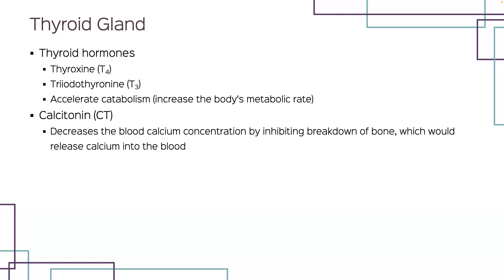Calcitonin is secreted by thyroid gland cells that lie outside of the thyroid follicles. Calcitonin decreases the concentration of calcium in the blood by first acting on bone to inhibit its breakdown. With less bone being reabsorbed, less calcium moves out of the bone into the blood, and as a result the concentration of calcium in blood decreases. An increase in calcitonin secretion quickly follows any increase in blood calcium concentration, even if it is slight. Calcitonin helps maintain homeostasis of blood calcium and prevents a harmful excess of calcium in the blood, a condition called hypercalcemia.